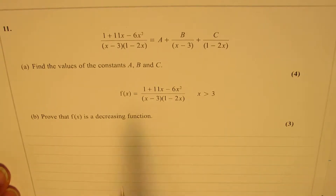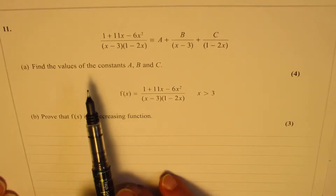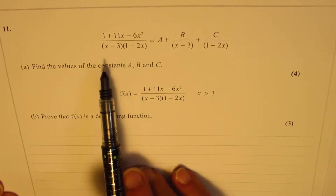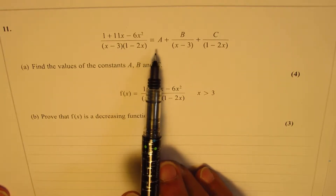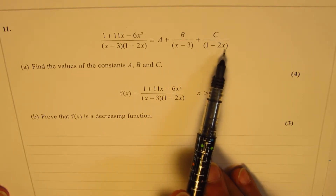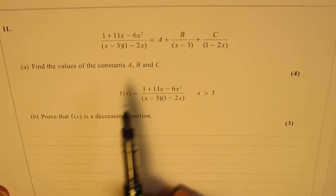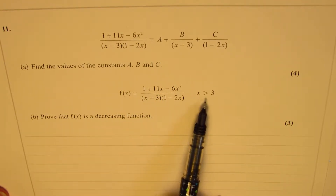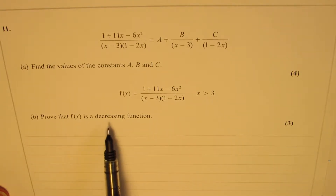Question number here is based on partial factoring and derivatives. The equation is (1 + 11x - 6x²) / [(x - 3)(1 - 2x)] = a + b/(x - 3) + c/(1 - 2x). Find the values of constants a, b, and c. Then we are given the same function for x greater than 0, and we need to prove that f(x) is a decreasing function.